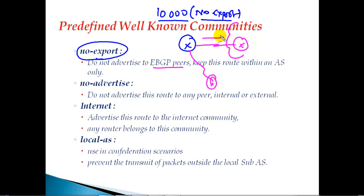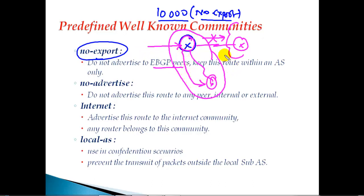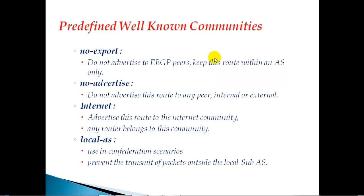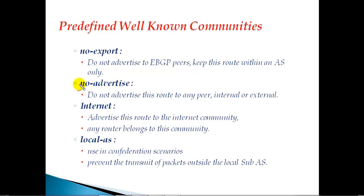No export means the route should not be advertised to external BGP neighbors, but it will advertise to all the routers within the same autonomous system number. This router receives the update and will advertise it to each and every router inside the same autonomous system, but that update will not be advertised to any external autonomous system. So no export means: do not advertise to external BGP peers, but still advertise to internal peers within the same AS.